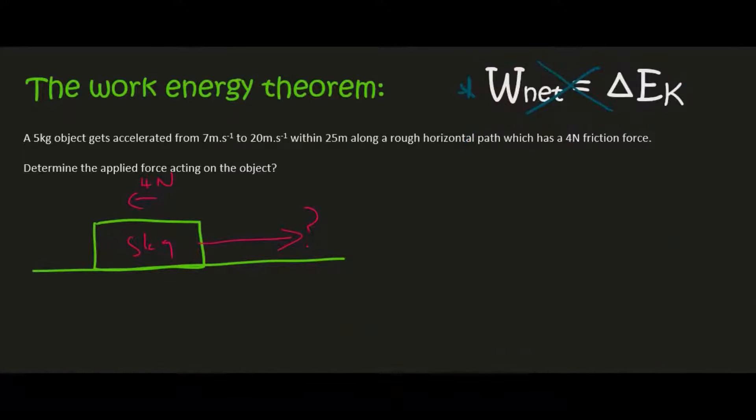So what's interesting about this question is that they've given us information about the velocity at the beginning and at the end and we have the mass. And so we could technically work out this entire part.